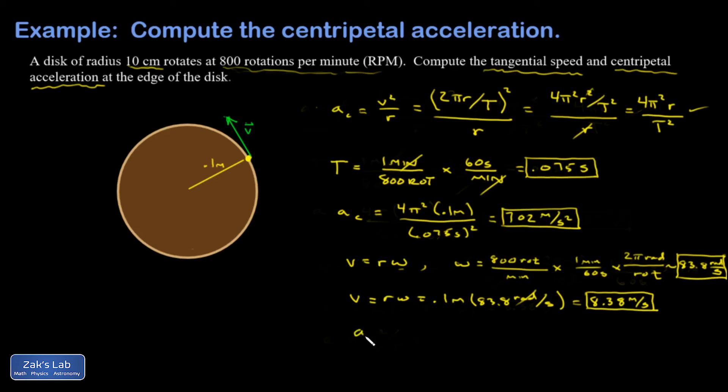I wanted to do a check on our work by going back to the original centripetal acceleration formula and saying, it's V squared over R. And now I know what V is. So, I have 8.38 meters per second all squared divided by the radius of the disk. The units in the numerator are meters squared over seconds squared. And then if I divide one factor of meters out of that, I get meters per second squared. That's good. Then I get 702-ish meters per second squared, which agrees with my first answer.